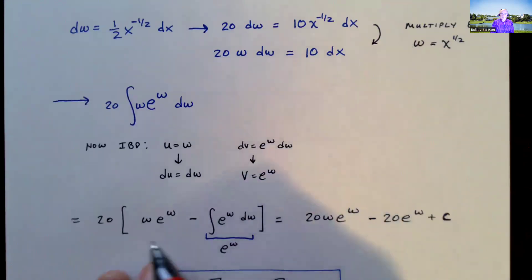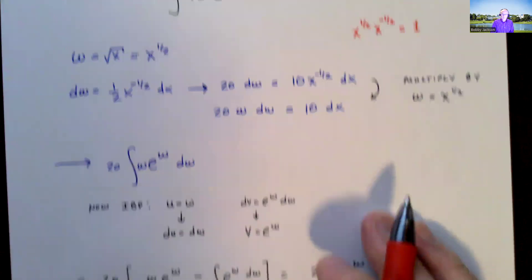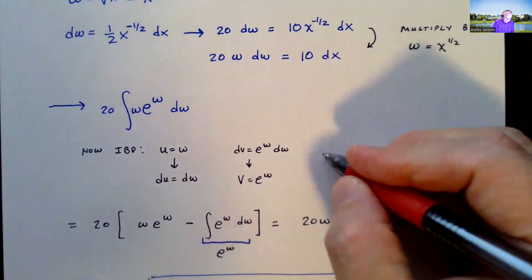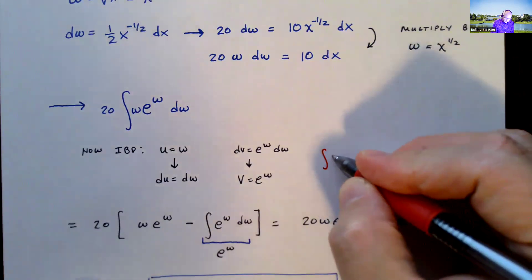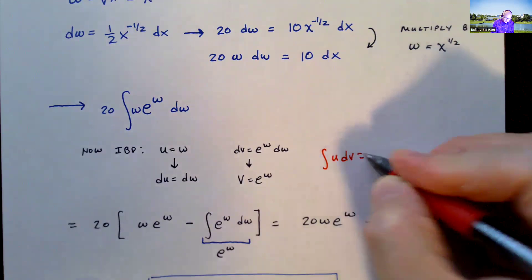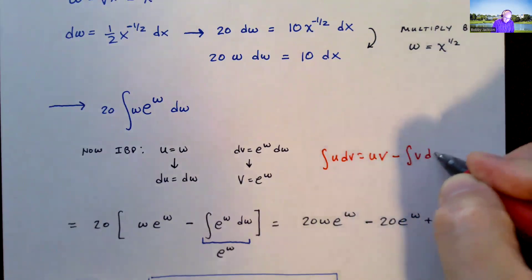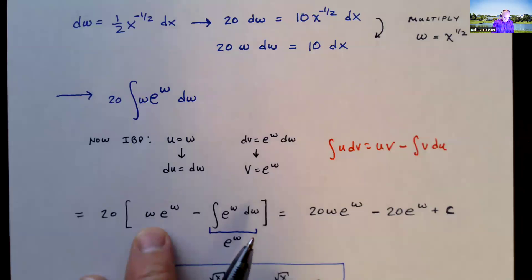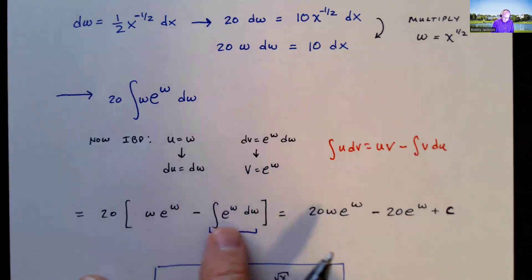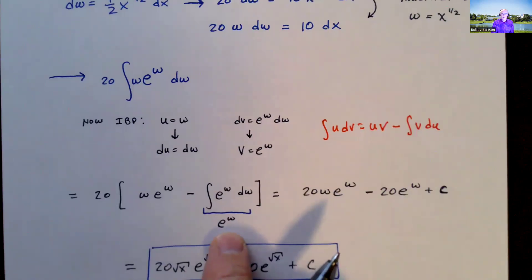And if you remember, the integration by parts formula said that the integral of u dv is u v minus integral v du. So I'm going to do u v here minus integral v. And then du is just dw. But now I just integrate e to the w, which is e to the w.